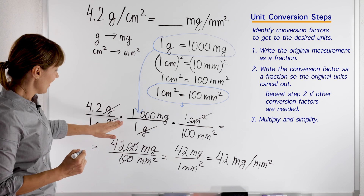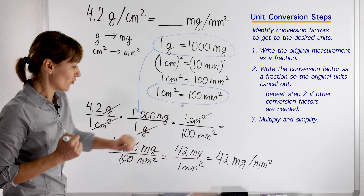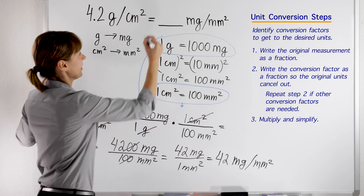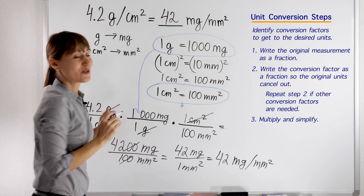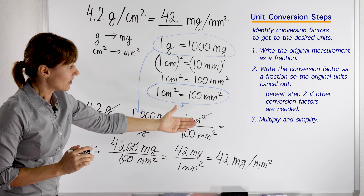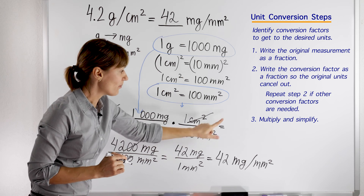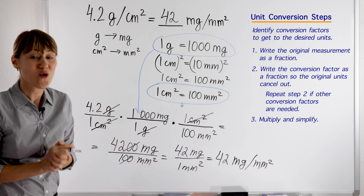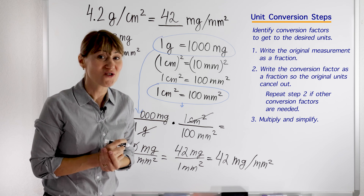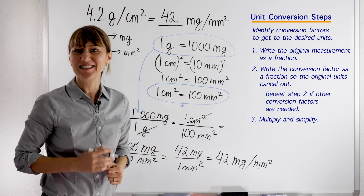We did it by multiplying by two conversion factors. So, 4.2 grams per centimeter squared equals 42 milligrams per millimeter squared. Is this helpful? Practice again and look at how we did it. If you need to convert more and more, you just keep multiplying the fractions in a row until you get to your desired units. Check out my other videos on conversions, and I hope this is helpful. I wish you success, and I will see you next time.